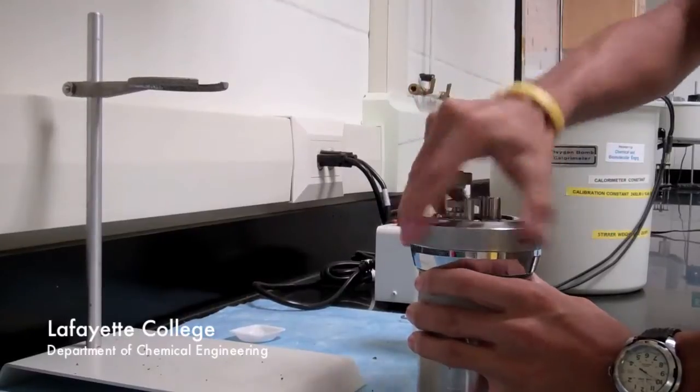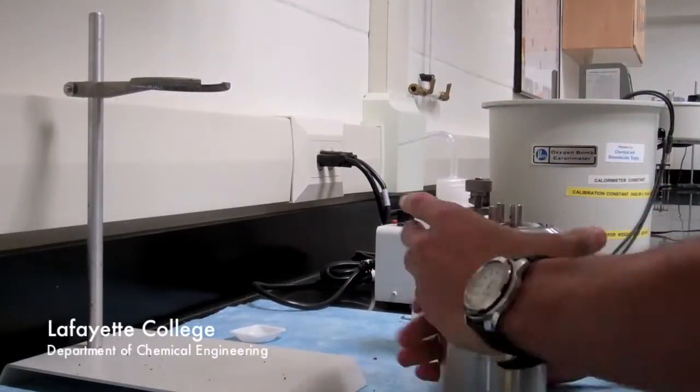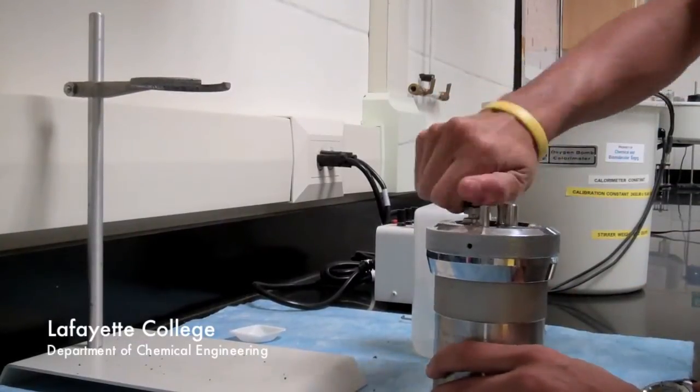When the cap is fully tightened, turn it back a little so that you will be able to remove it after the experiment is complete. Next, close the gas release valve by tightening it fully. You are now ready to pressurize the bomb.